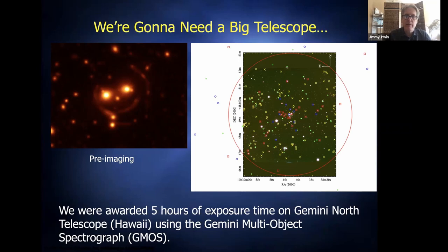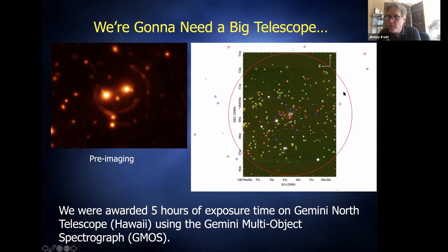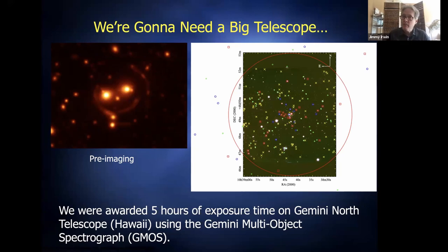On the question of whether a gravitationally lensed object could simply be repositioned rather than distorted or duplicated — yes, that's theoretically possible if the mass distribution were perfectly symmetric. But if there's only one image and no duplication, you'd have no way of knowing whether it's been shifted by gravity or whether that's its true position. We'll probably never have a good enough model of the mass distribution to confidently say an object has been repositioned when all you have is a single image.